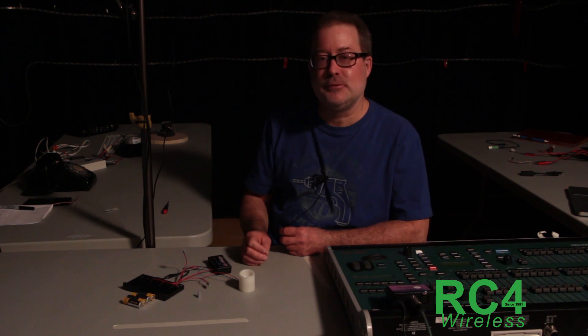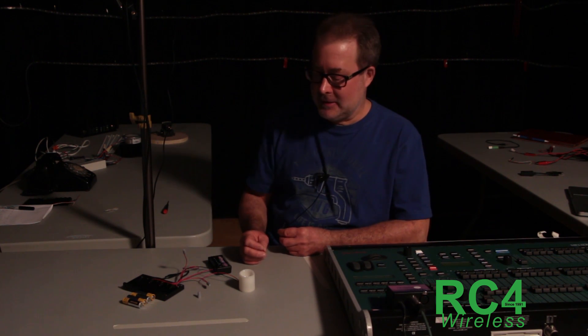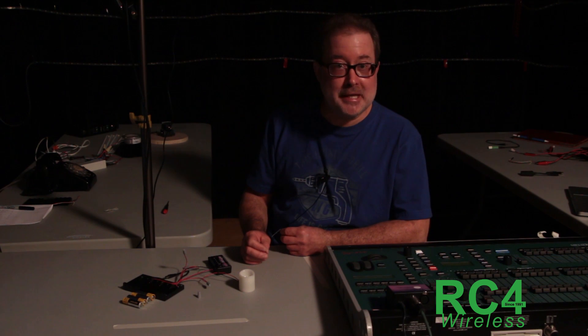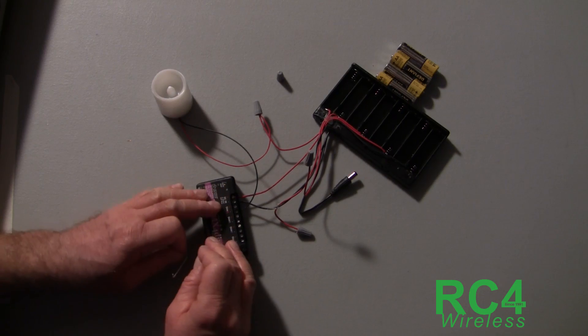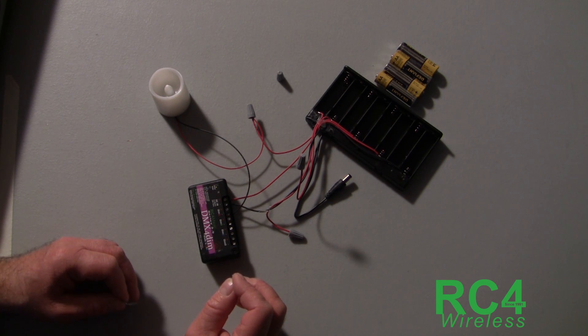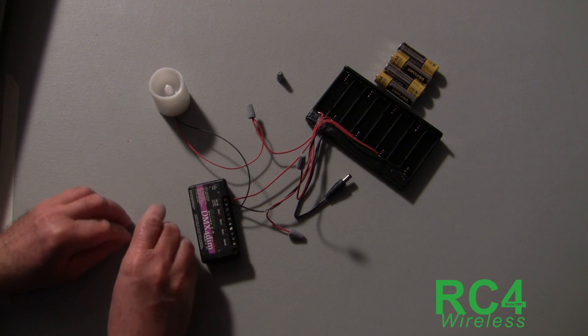And what we want to do is build this into a prop or a set piece and use it as a wireless candle. So, it already has a little flicker thing in it. I have this dimmer set to defaults and I will now show you how we come up with that voltage.